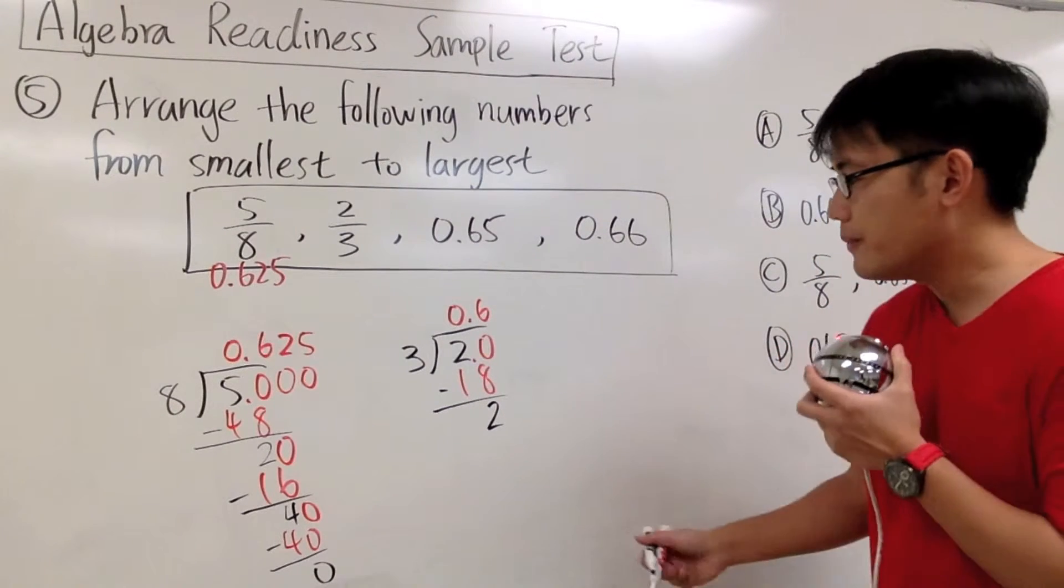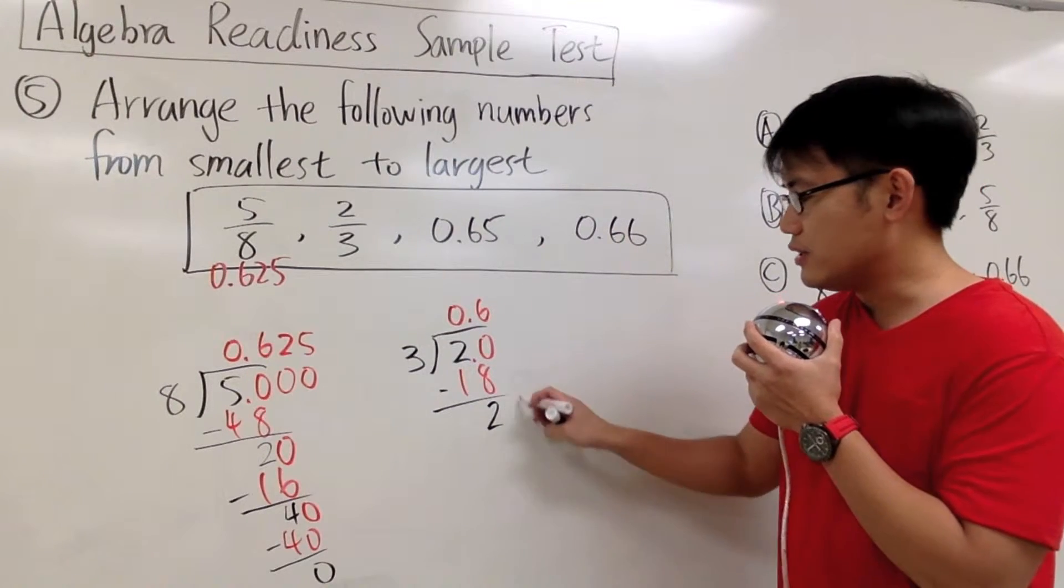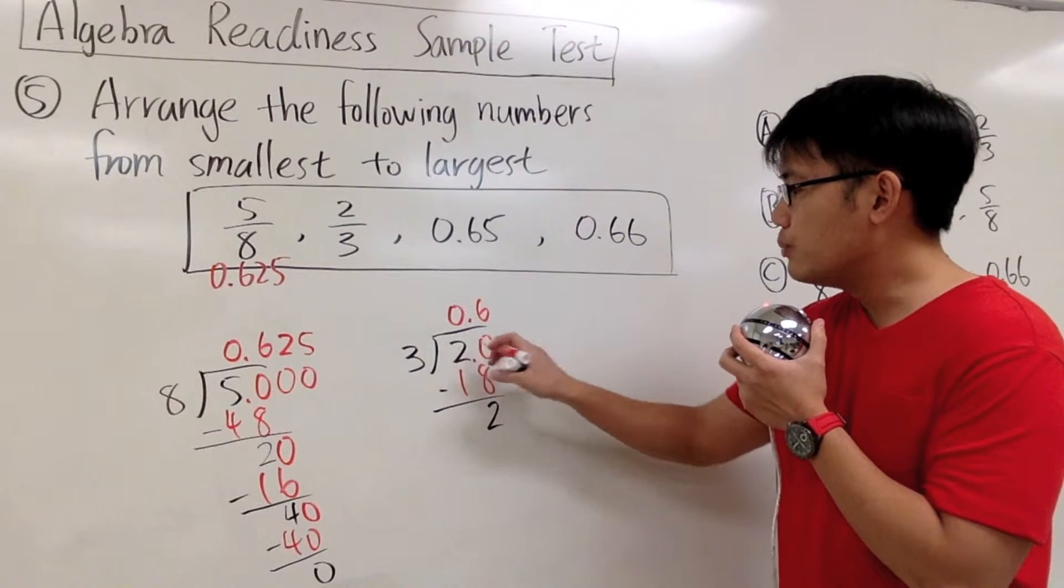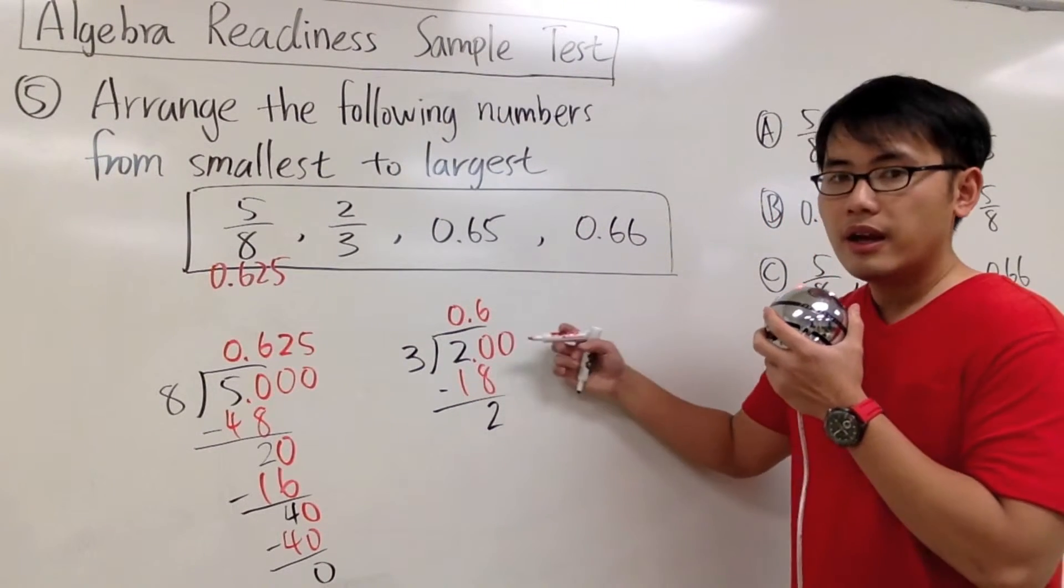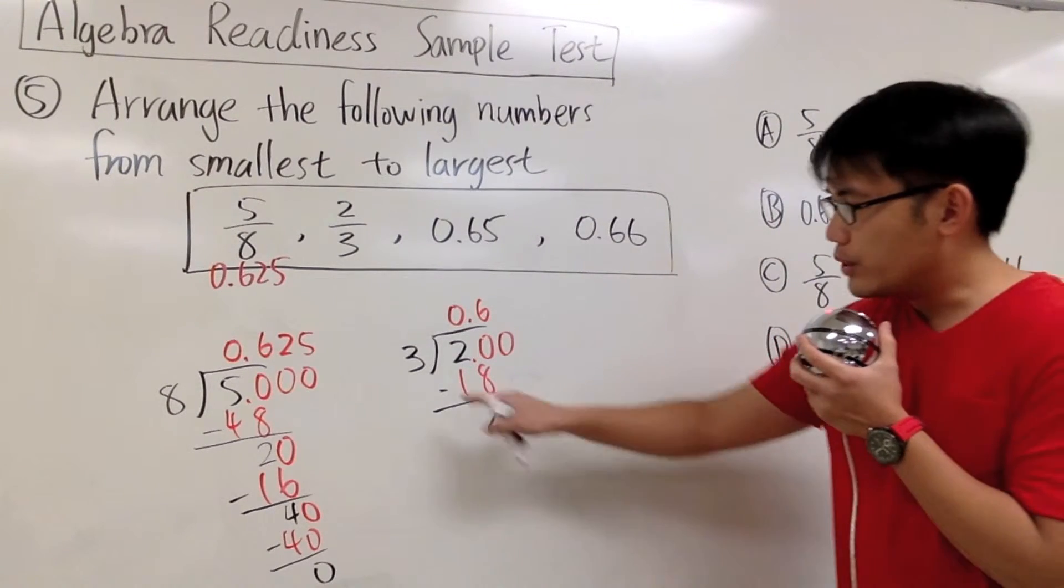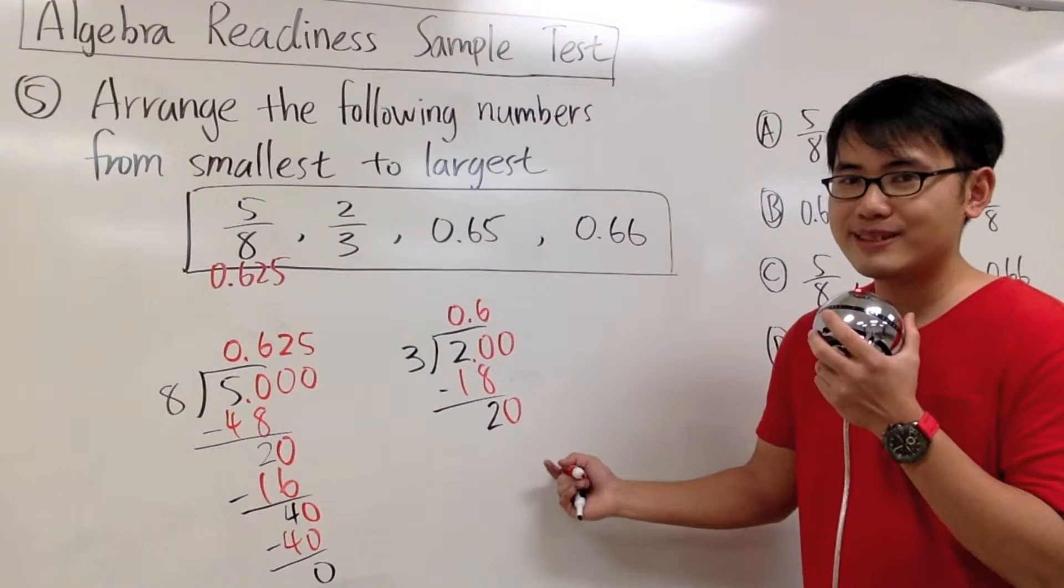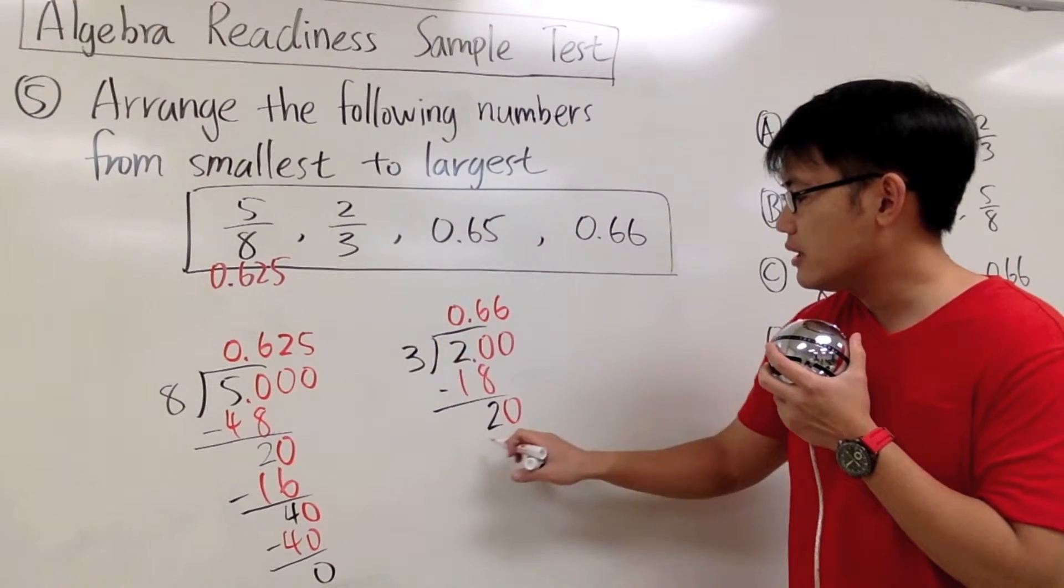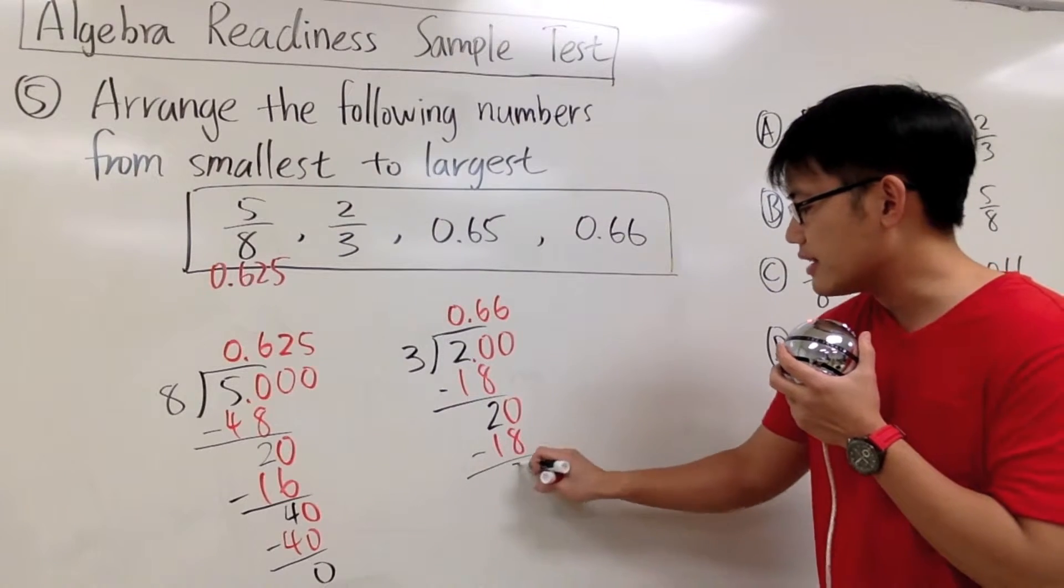You don't necessarily need to put a 0 here. But then you should always have 0 right here to continue. But then I just want to show you that 2.0 is the same as 2.00. That's why I can bring down this 0 down here. And then we can continue by asking ourselves, 3 goes into 20 how many times? Once again, 6 times. 6 times 3, that will be 18. And once we subtract, we have 20 minus 18. That's another 2.